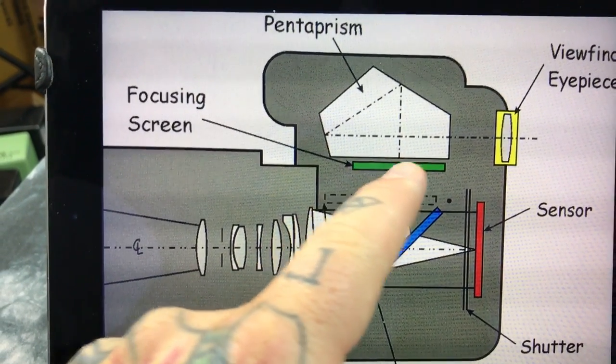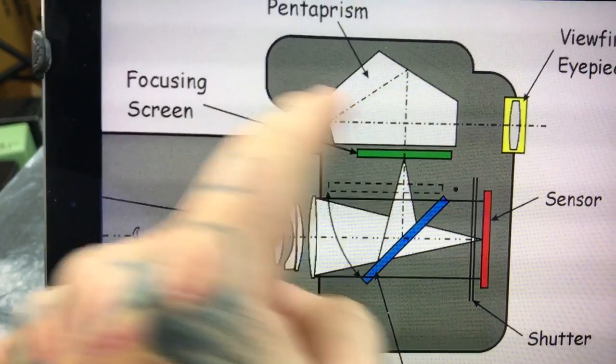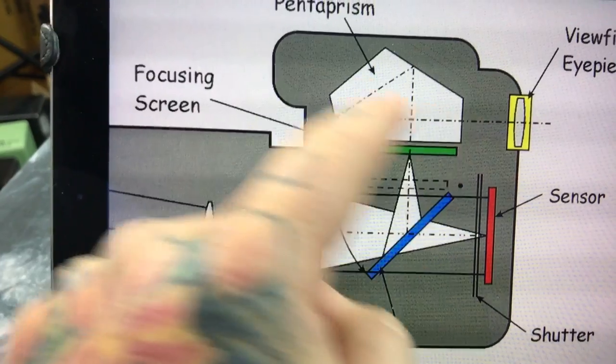The light passes up through here, through your focusing screen, reflects off your pentaprism, and back to your viewfinder.